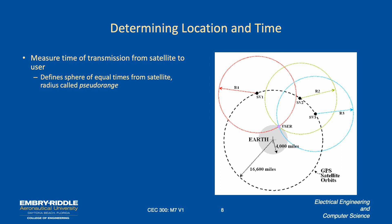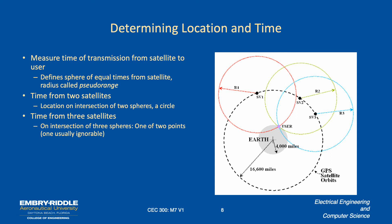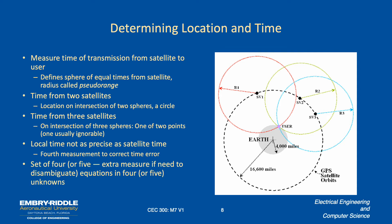Three measurements get you down to your location on Earth, disambiguating between the surface point and the point outside satellite orbit. A fourth measurement is needed to correct the time error in your local clock. So: two satellites give you a circle, three satellites give you two points, and the fourth measurement corrects the time error. You need at least four satellites, or five if you need to fully disambiguate in space, though once you know you're on the Earth's surface three measurements suffice.